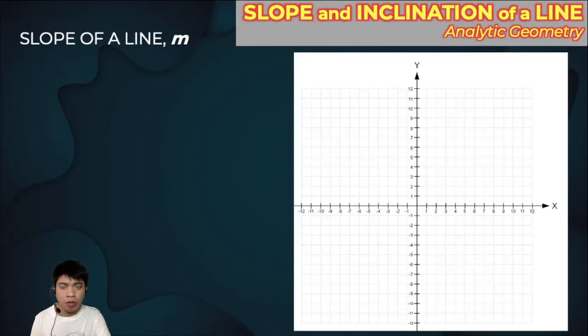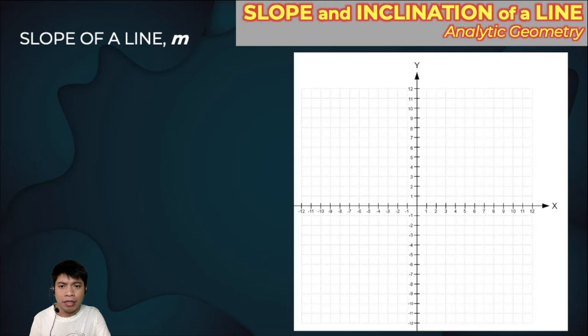The symbol for slope is M. Usually if you're in engineering, you know that the slope is computed as rise over run.